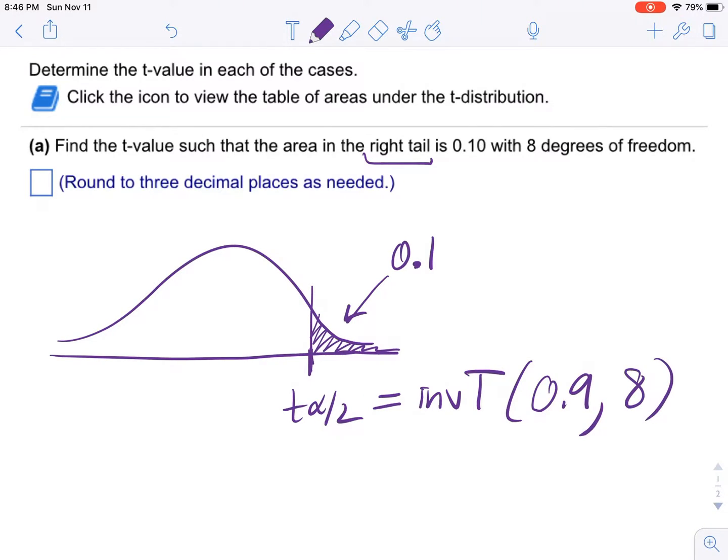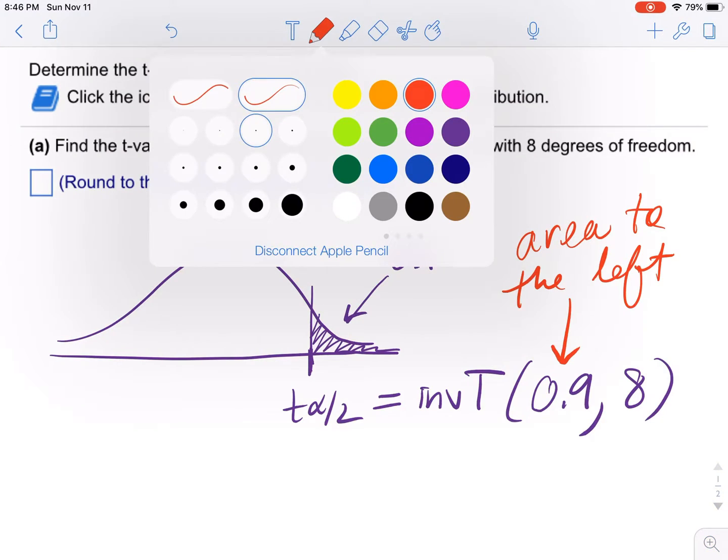freedom, which are eight. And the 0.9, that's going to be the area to the left. So this function takes the area to the left, then the degrees of freedom, and it gives you a z-score